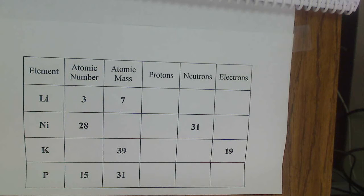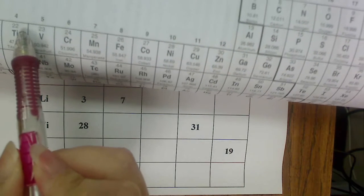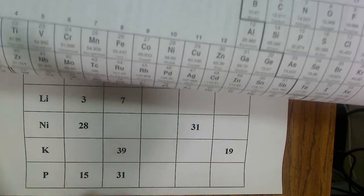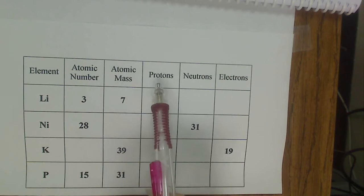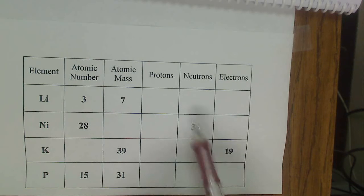Today I'm going to show you how to fill out this chart when you have things missing. We could look at the periodic table to find the element symbol or the element names. But if we're just looking for the atomic number, the atomic mass, the protons, the neutrons, or the electrons, and we have part of it already filled out, we can find all of that information just by looking at the chart.